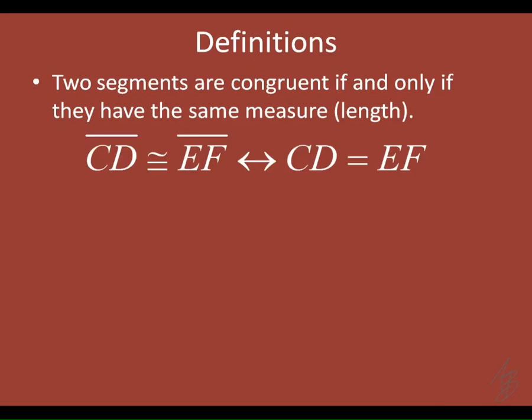Here's what the definition looks like written out mathematically — this is worth writing down. Notice the double arrow, which says it works both ways. On one side of the definition we have the congruent symbol; on the other side we have an equal sign. So if segment CD is congruent to segment EF — meaning the two shapes are the same — then we know their measures are equal.